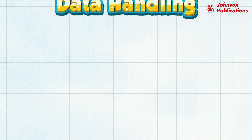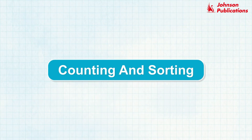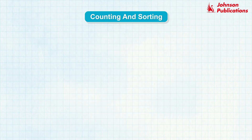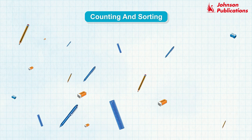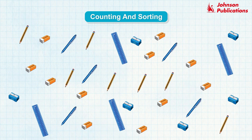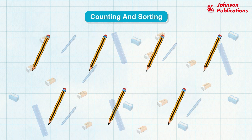Data Handling: Counting and Sorting. Let us count the number of stationary items that you see on the screen one by one. Count the pencils first. 1, 2, 3, 4, 5, 6, and 7. There are 7 pencils.